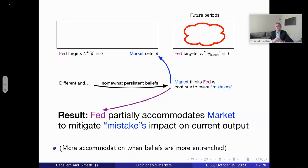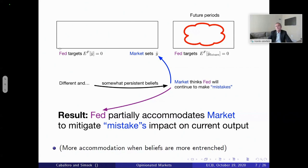This is the main result for monetary policy: the Fed will have to partially accommodate the market to mitigate the impact that the market's perceived mistakes of the Fed have on aggregate demand. Very naturally, if these beliefs are very entrenched and the disagreements are likely to affect the future for a long time, then the Fed needs to accommodate the market even more. In fact, we have an extreme result in the paper: if the two sides are completely stubborn and never willing to learn, then the Fed should follow the market and ignore its own beliefs. The more entrenched the beliefs, the more the Fed needs to accommodate the market.